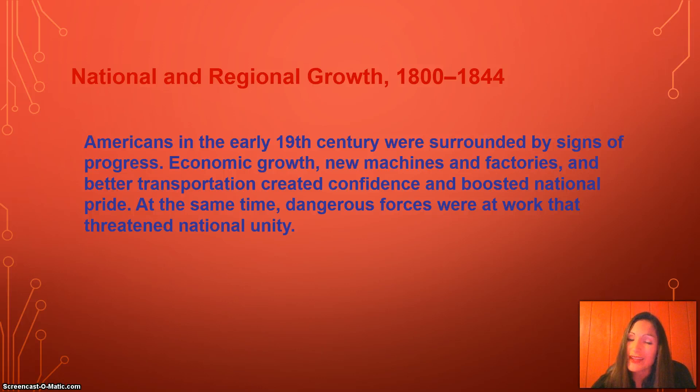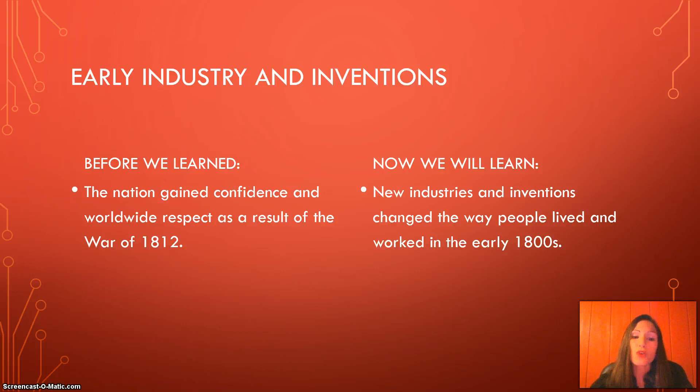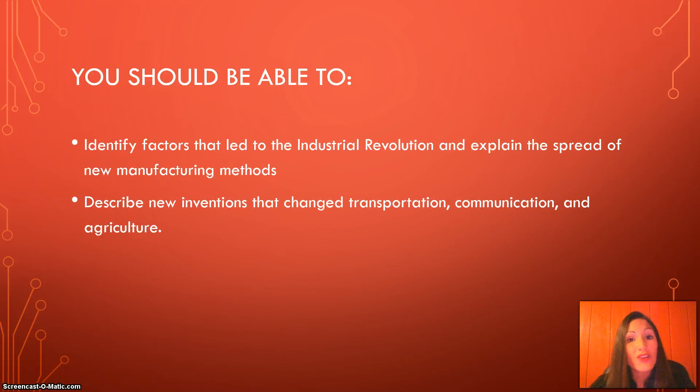Before we learned that the nation gained confidence and worldwide respect as a result of the War of 1812, today we are going to see that new industries and inventions changed the way people lived and worked in the early 1800s. At the end of this video lecture, you should be able to identify factors that led to the Industrial Revolution and explain the spread of new manufacturing methods. You should also be able to describe new innovations and inventions that changed transportation, communication, and agriculture.